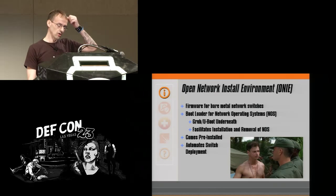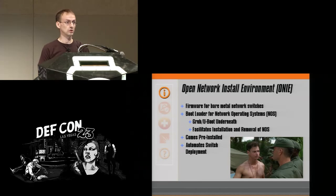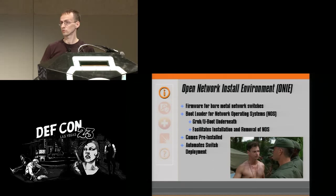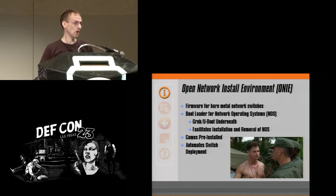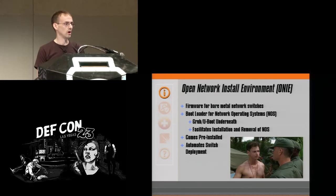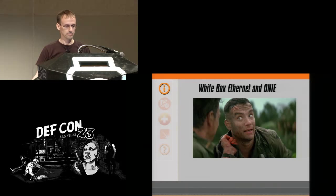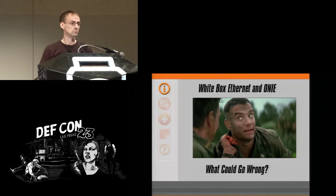To make all this possible — to make white box actually plug and play — they adapted ONIE. It's firmware for bare metal network switches. There's a bootloader underneath: it's GRUB or U-Boot to boot the system. Then ONIE is there to boot the network — to grab or install a network operating system. If you need a new one, it will go out and grab another network operating system and install a different one. ONIE comes pre-installed on the network switch as part of the firmware, and it automates that switch deployment.